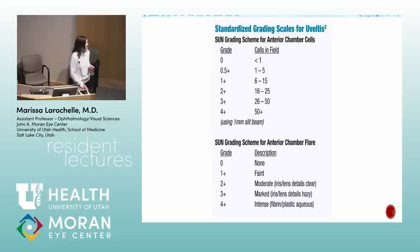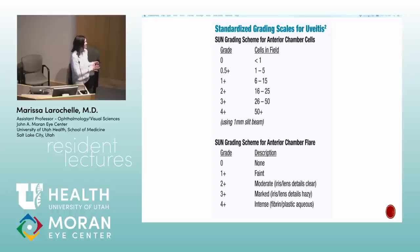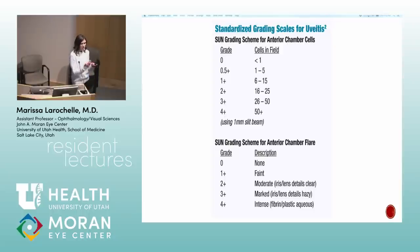Anterior chamber cell grading: 10 cells is 1-plus, 20 is 2-plus, 30 is 3-plus, and up to 50 is still 3-plus. If you have a hypopyon it's automatically 4-plus because there are so many cells layering out. You use the slit lamp at an angle, as bright as possible, magnified in a 1 by 1 millimeter box to look for anterior chamber cell and flare.